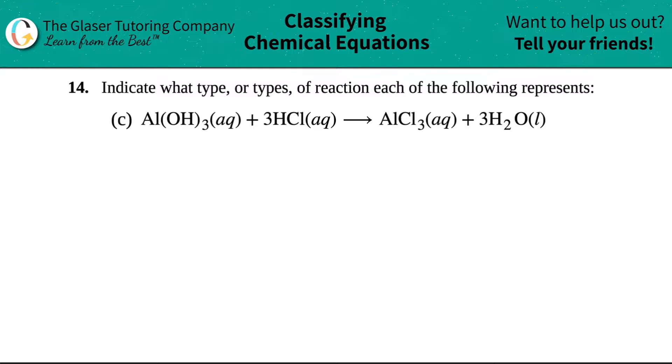Number 14. Indicate what type or types of reaction each of the following represents. And then I have C out of the bunch. So in this equation, we have Al(OH)₃ plus HCl yields AlCl₃ plus three H₂Os.